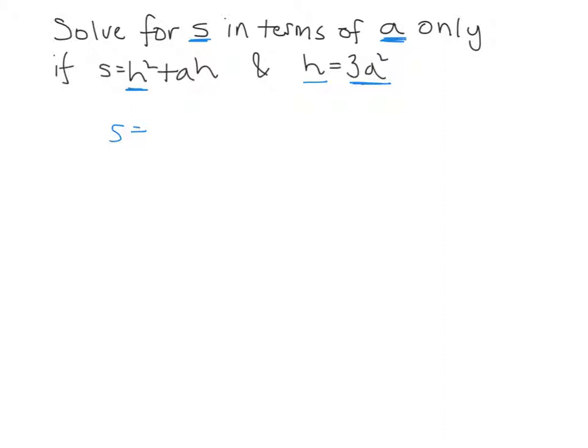So I could rewrite this in place of H, 3A squared. And in place of H here, 3A squared. That would mean I'd end up with 9A to the 4, because 3 squared is 9. A squared, all squared, 2 times 2 is 4, plus 3A cubed.